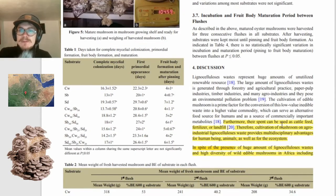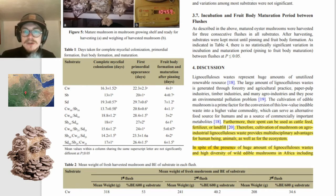We go down once again. Furthermore, their spent substrate can be used as cattle feed, fertilizer, or landfill. Therefore, cultivation of mushroom on agro-industrial lignocellulose waste provides multidisciplinary advantages for human being, animals, as well as for the ecosystem. So even after all of that, that waste can continue to live on, can continue to go back into the environment. That is great. That's perfect. Who wouldn't want that?